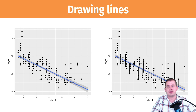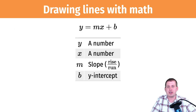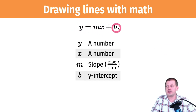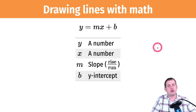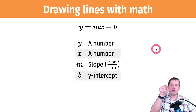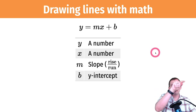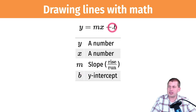Because lines have mathematical formulas that you can manipulate, if you remember back in eighth grade when you covered how to draw lines, you hopefully learned the formula y = mx + b. That has specific components: y and x are numbers, m is the slope defined as rise over run — so if the slope is 1 over 2, you go up 1 and over 2 repeatedly — and b is the y-intercept, where your line starts.